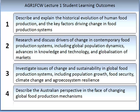The third learning outcome will enable investigation into the issues of change and sustainability in global food production systems. This includes, most importantly, population growth, food security, climate change impacts, and agro-ecosystem resilience. The final student learning outcome is to be able to describe the Australian perspective in the face of changing global food production mechanisms.